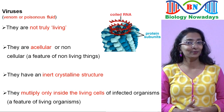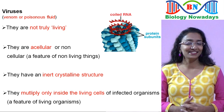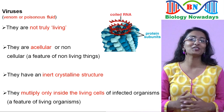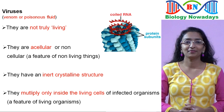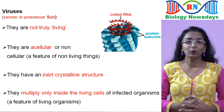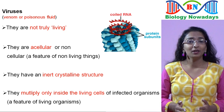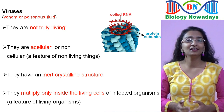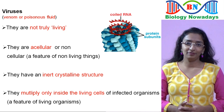They have an inert crystalline structure, but they can multiply inside the living cells of infected organisms. They can reproduce, and that's a feature of living organisms. So now you understand why Whittaker didn't include viruses in his classification.